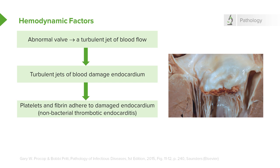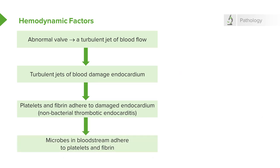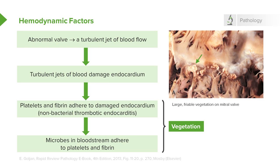There's a vegetation on the valve, but there's no bug in it. Now if you have microbes in the bloodstream at the same time — especially those that can adhere to platelets and fibrin — you've got infective endocarditis. It's no longer non-bacterial thrombotic endocarditis; it's bacterial thrombotic endocarditis. Here you can see a large friable vegetation on the mitral valve. We call those little excrescences on the mitral, aortic, or whatever valve a vegetation.